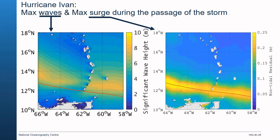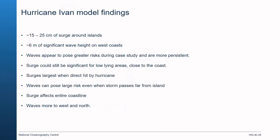The locations where there might have been hazardous surge differ to those where there could have been hazardous wave impacts. The summary findings were that surge around the islands was between 15 to 25 centimetres depending on position relative to the track, wave heights could reach up to about six metres on the west coasts, waves appear to pose the greater risk and are more persistent, surge can still be significant for low-lying coastal areas, and waves can pose a large risk even when storms pass from afar.